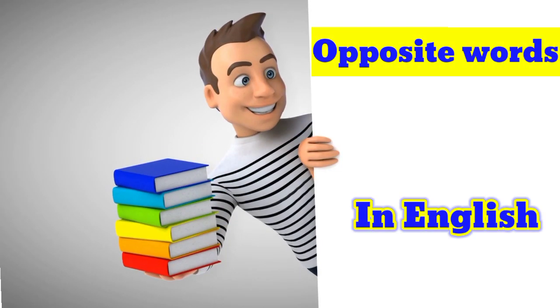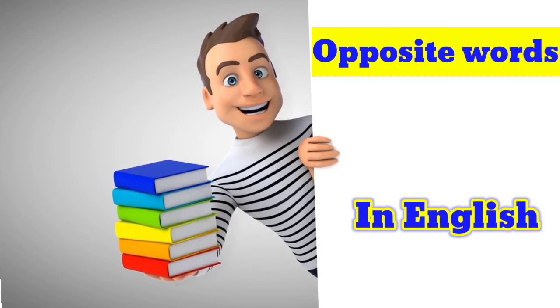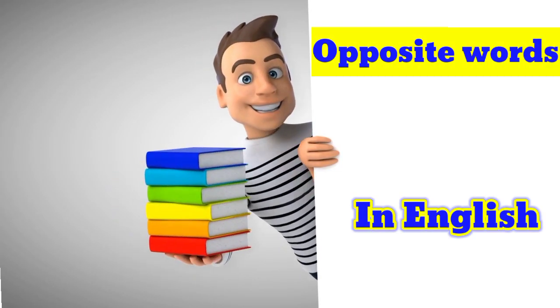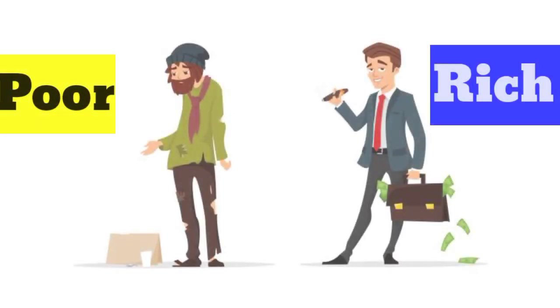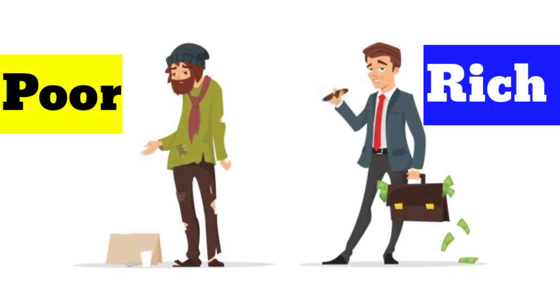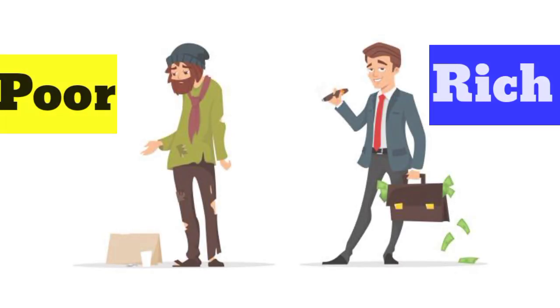Opposite words in English. Let's learn together. Light. Dark. Poor. Rich.